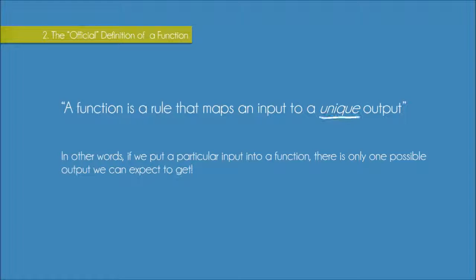Remember that unique just means one of a kind. So that means that if we put a particular input into a function, there is only one possible output that we can get. It's not like a lucky dip. We can't put an input into a function and not know what we're going to get out.